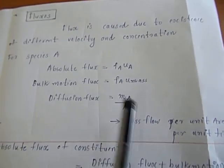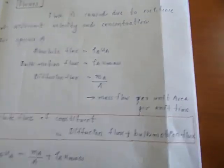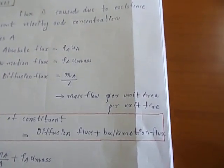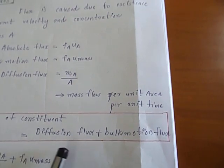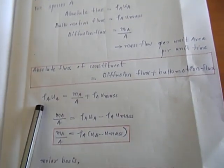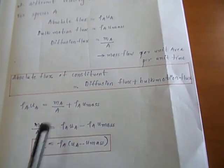Diffusion flux is equal to mass flow per unit area per unit time. Absolute flux of the component is equal to diffusion flux plus bulk motion flux. That is, rho_A U_A is equal to M_A by A plus rho_A U_mass.